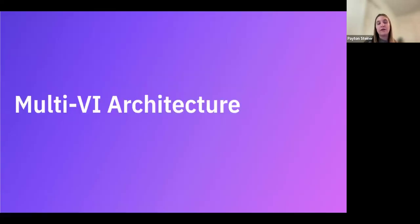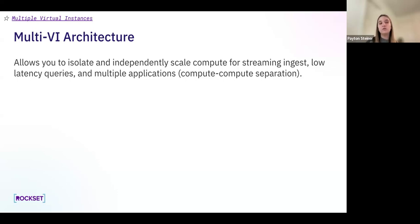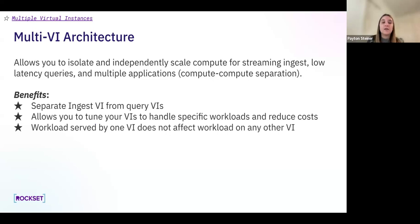Next, we're going to go into multi-virtual instance architecture. This allows you to isolate and independently scale compute for streaming ingest, low latency queries, and multiple applications — otherwise known as compute-compute separation. We highly recommend using a multi-VI architecture because the benefits are that you separate your ingest VI from query VIs, isolating these two workloads. It also allows you to tune your VIs separately to handle their specific workloads at a reduced cost.